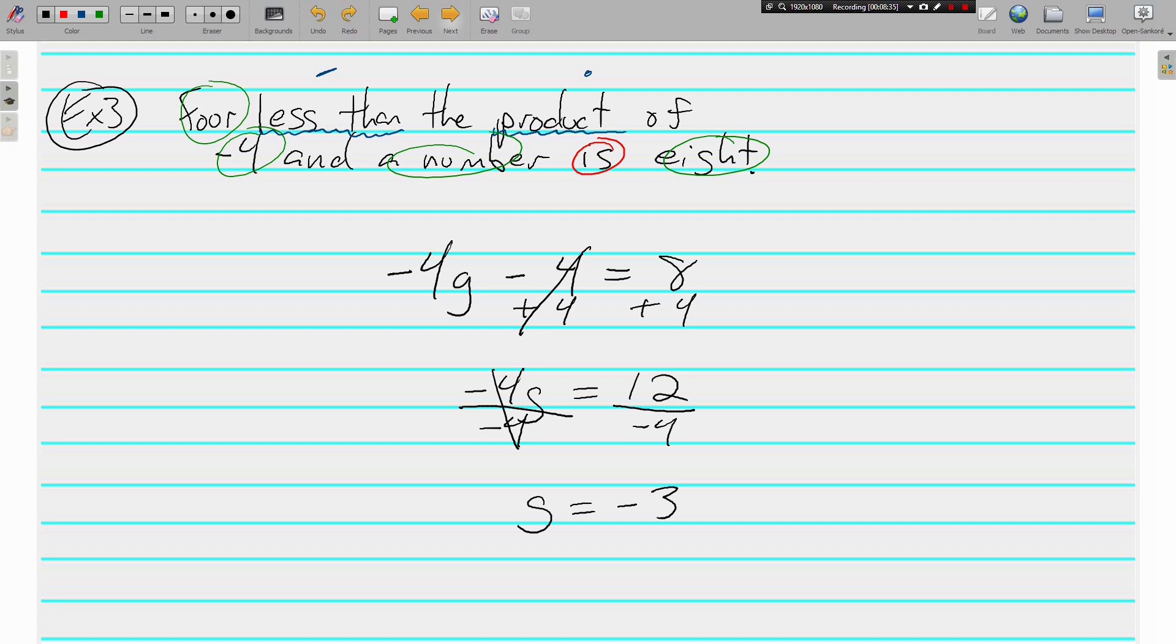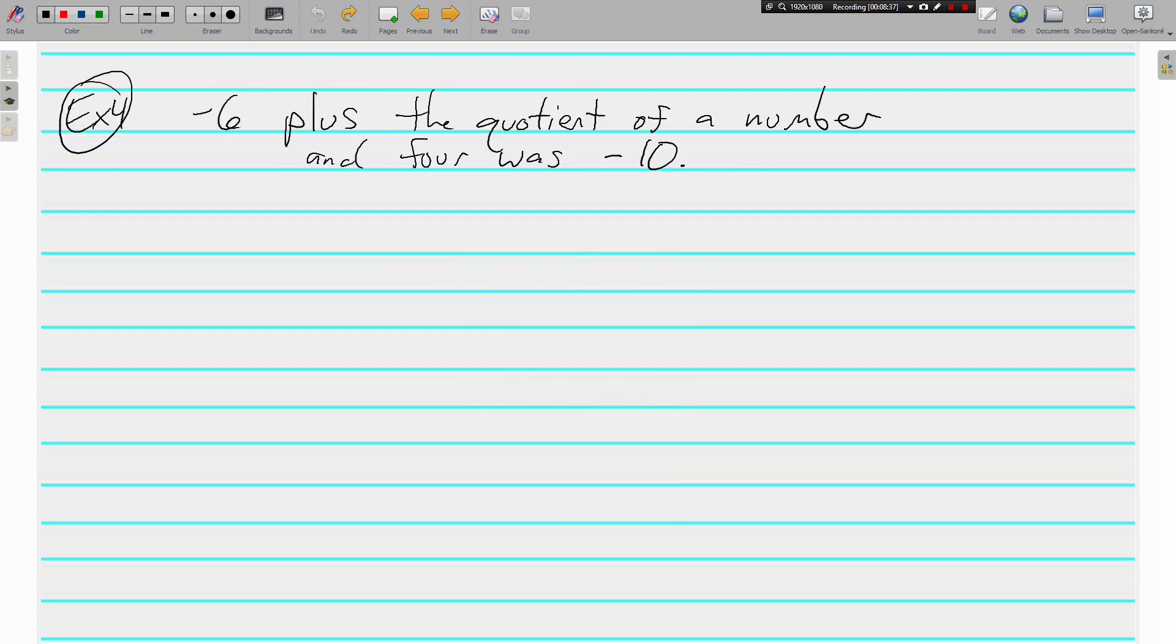One more of these. Write and solve two-step equations. Six plus the quotient of a number and four was negative ten. Was and is are pretty much the same thing. That's going to be an equals. Other key words. We have plus. We know that's add. We've got quotient. We know that's divide. Although I'll probably write it as a fraction instead of with that symbol.